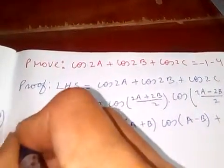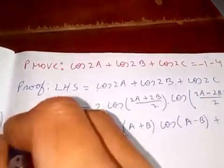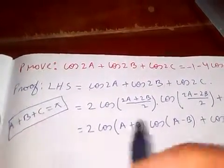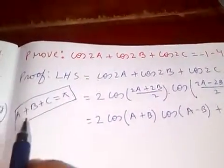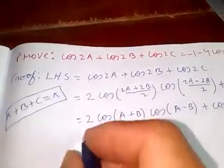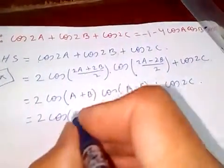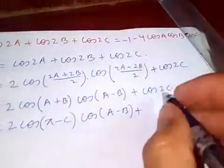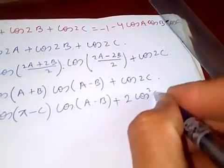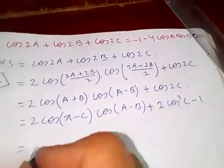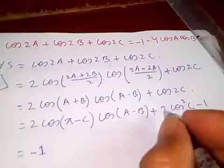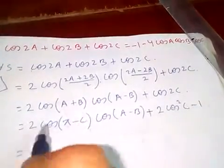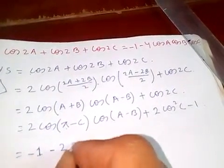We use the condition A + B + C = π, since in any triangle the sum of angles is 180 degrees. From this, A + B = π - C. Substituting: 2·cos((π-C)/2)·cos((A-B)/2) + cos2C. Now cos((π-C)/2) simplifies, and we know cos(π - C) = -cosC.